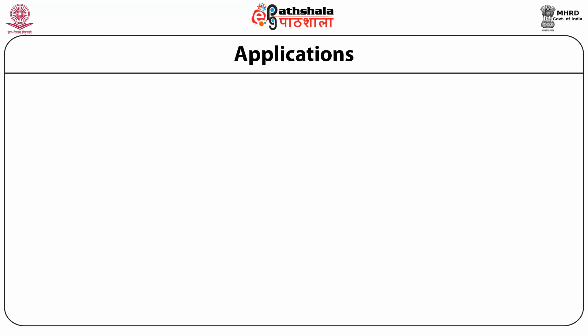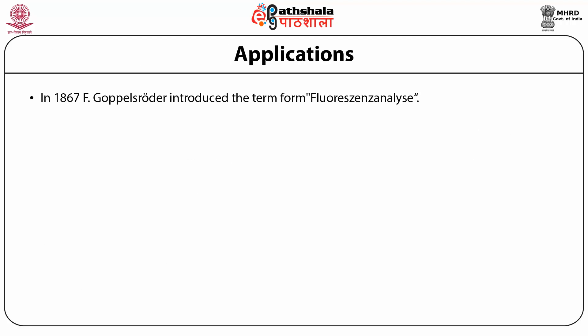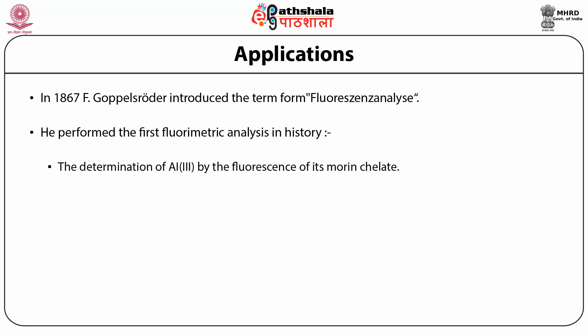Related to development of applications: In 1867, F. Göpelsröder introduced the term fluorescence analysis and performed the first fluorometric analysis in history — the determination of aluminum by fluorescence of its morin chelate.